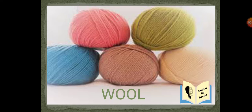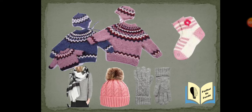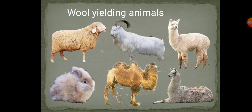You are all familiar with the word wool — we wear woolen clothes in winter. A variety of woolen clothes are made up of wool: sweaters, socks, mufflers, caps, hand gloves, etc. We get wool from animal fiber, which we obtain from the fleece of animals like sheep, goat, yak, Kashmiri goat, alpaca, llama, camel, angora rabbit, etc.